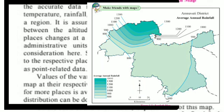In this map, annual rainfall is shown starting from 800 mm. The 800 mm isopleth line passes through areas where the annual rainfall is the same. Rainfall increases towards 900 mm and up to 1300 mm. Wherever the 1300 mm line passes, that region receives 1300 mm of annual rainfall. This is how an isopleth map works — it accurately represents data, and the more locations we have data for, the more accurately we can show it on the map.